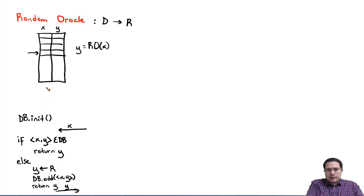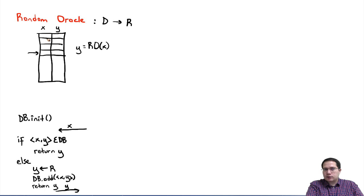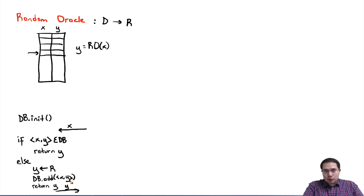This simulated version is equivalent to the full lookup table. Initially the database is empty. When the first query arrives for some x, the random oracle creates a random y for that x — like filling in the first row of the table. If a new x comes, it does the same, creating another row. If the same x is queried again, it finds it in the database and returns the same y. So given the same input it always returns the same output.